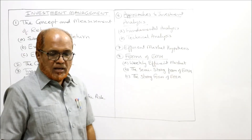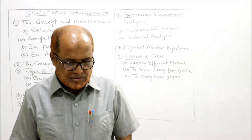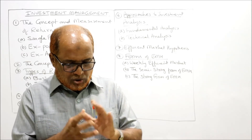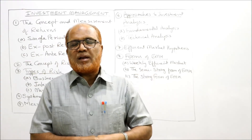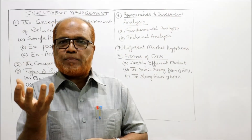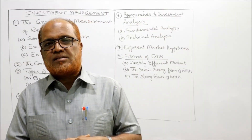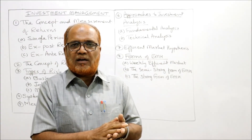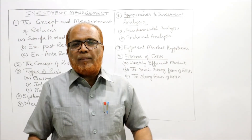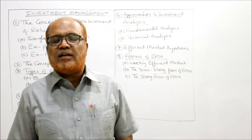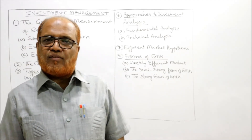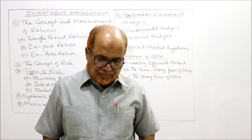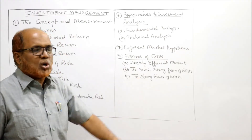The second is the semi-strong form of efficient market hypothesis. In this form, the market absorbs quickly and efficiently not only past price information but also all publicly available information. Market prices depend on publicly available information such as profit and loss accounts, balance sheets, and other statements provided by companies. All such publicly available information is reflected in the current market price.